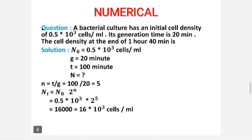Let us solve one numerical example. A bacterial culture has an initial cell density of 0.5 × 10³ cells per milliliter, and its generation time is 20 minutes. Find the cell density at the end of 1 hour 40 minutes (100 minutes). Given: n₀ = 0.5 × 10³ cells/mL, g = 20 min, t = 100 min. First, calculate number of generations: n = t / g = 100 / 20 = 5. Then: nₜ = n₀ × 2⁵ = 0.5 × 10³ × 32 = 16 × 10³ cells per milliliter.